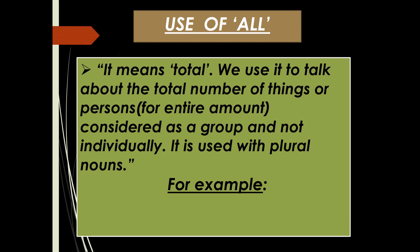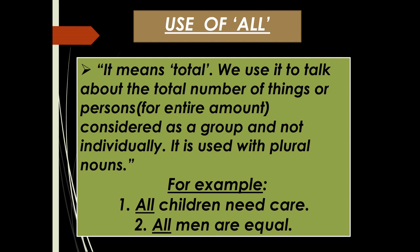Use of 'all': It means total. We use 'all' to talk about the total number of things or persons considered as a group, not individually — the entire amount. It is used with plural nouns. For example: 'All children need care' and 'All men are equal' — here 'all' refers to every member of the group collectively. 'All' may also refer to uncountable nouns or plural countable nouns.